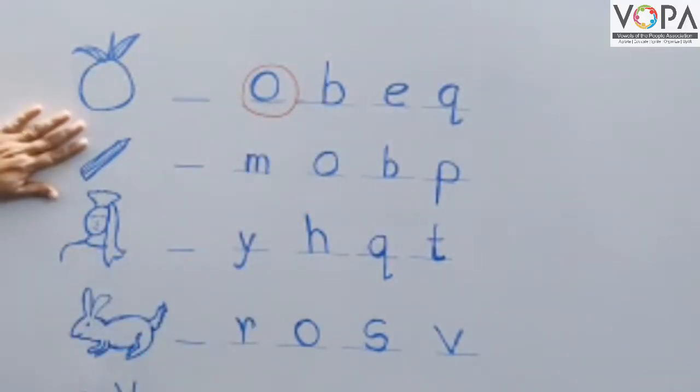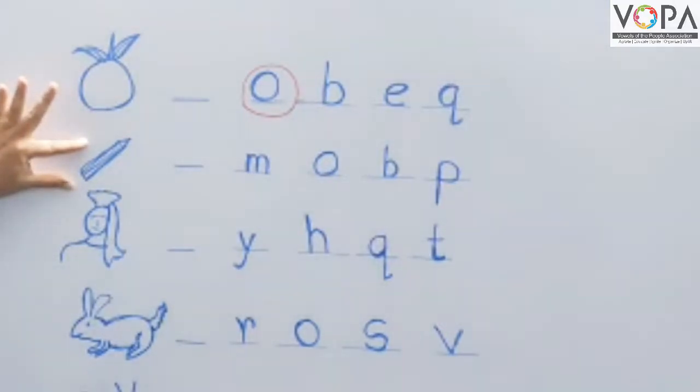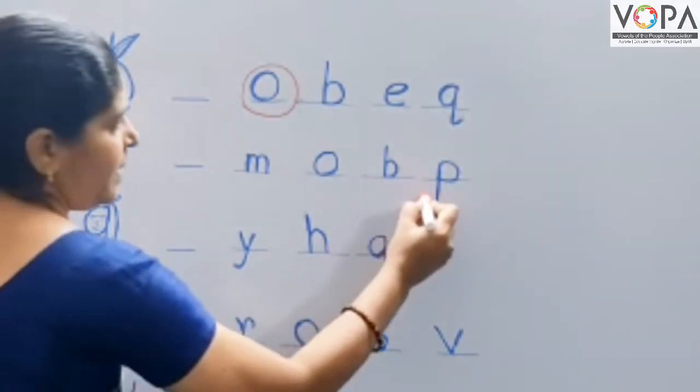Then the next picture. This is the pencil. P for pencil. P-E-N-C-I-L, pencil. The first letter of pencil is P. So we circle round the letter P.